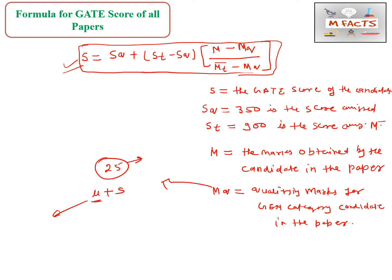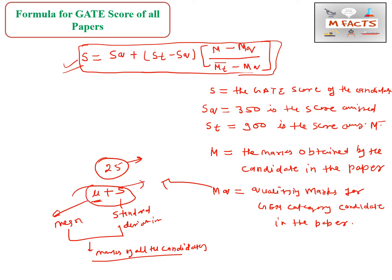For the metallurgy branch, Mq can also be calculated as μ + σ, where μ is the mean and σ is the standard deviation of the marks of all candidates who appeared in that paper. Whichever is larger — 25 or μ + σ — we put that value in Mq. For metallurgy, most of the time they use μ + σ because the number of students is very low.